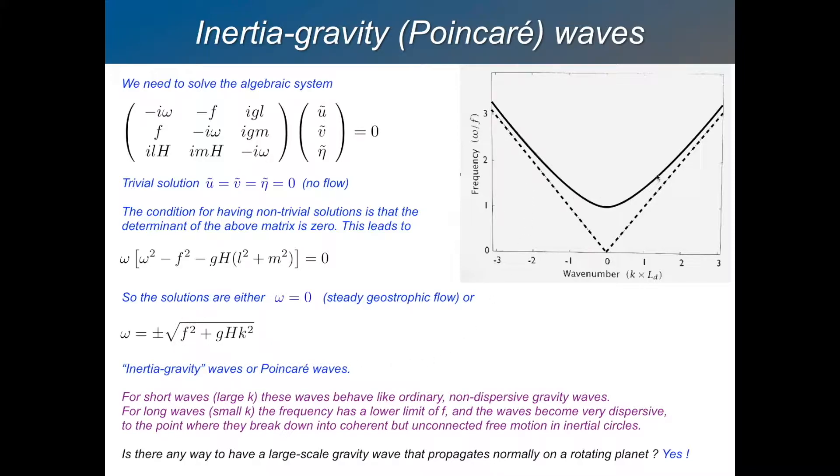you're adding this extra term under the square root, then you get this curve. So for large values of the wave number, that means short waves. It's very similar. So very small scales. Whether you've got your rotation or not doesn't make any difference to the way the waves propagate. But then as you go to larger scales, this curves around and flattens out. And in fact, it comes to a minimum frequency, which is equal to f. And the limit where k equals 0, omega equals f.